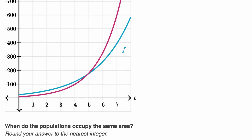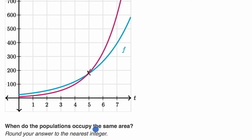They ask: when do the populations occupy the same area? Round your answer to the nearest integer. You can see very clearly that the curves intersect right around there — that's the point at which they occupy the same area. It looks like about 175 square millimeters, but they're not asking about the area. They're asking when it happens, and it looks like after about five hours. So: five hours.